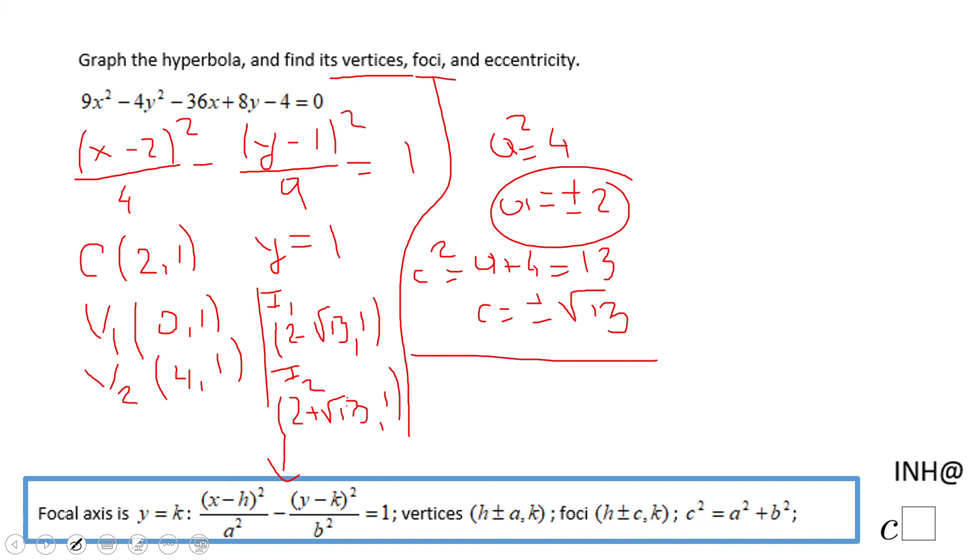Eccentricity, eccentricity is very simple, it's just c over a. In this case that a is the reason we use, because the focal axis is a horizontal line. So in this case, we're going to have √13/2, and that's it.